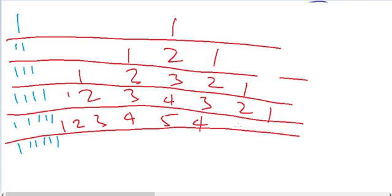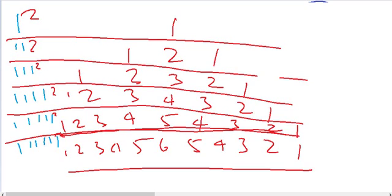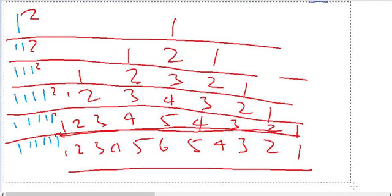Square of 11111 is 123454321 — that's 1, 2, 3, 4, 5, 4, 3, 2, 1. And square of 111111 gives 1, 2, 3, 4, 5, 6, 5, 4, 3, 2, 1. These are very interesting palindromic patterns in the squares of repunit numbers, and they are really useful for remembering squares.